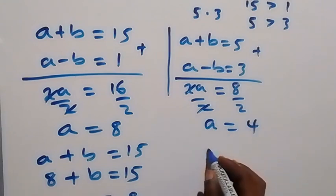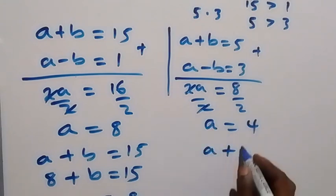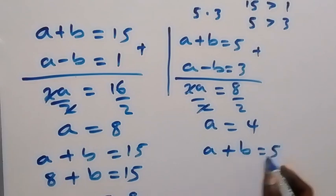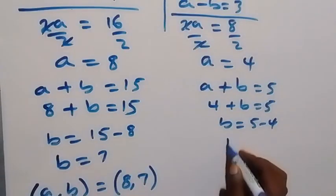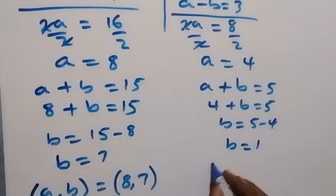Using one of the equations, a+b = 5. Since a = 4, we have 4+b = 5. Taking 4 to the other side, b = 5-4 = 1.